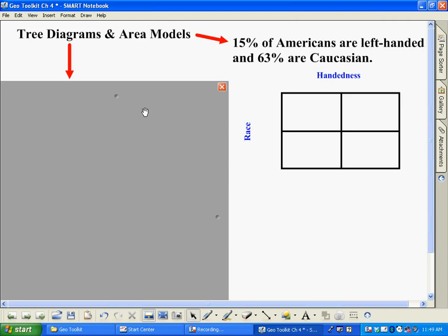Alright, there are two techniques for probability. One is called a tree diagram and one is called an area model that we use. Let's go ahead and take a look at the area model first here.